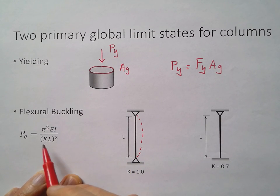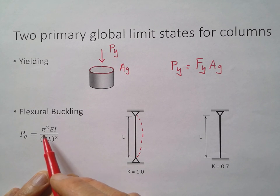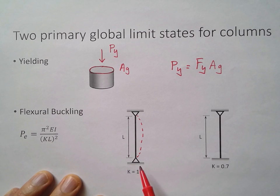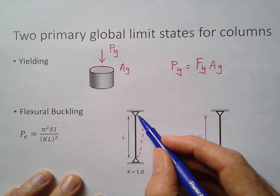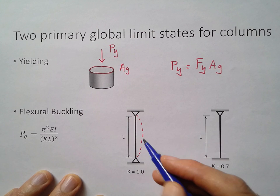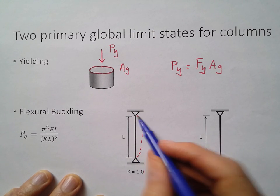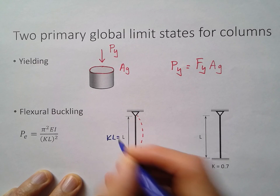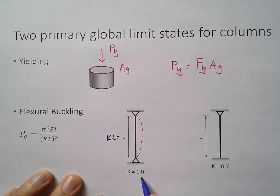With this equation, one thing I want to point out is that this K here, that's called the effective length factor, and KL is the effective length. That tells you basically how this is going to buckle based on the end conditions. For a column that's pinned top and bottom, you can see K is equal to 1.0. I like to try to visualize this in a couple of ways. You can think about KL essentially being the distance between inflection points, or another way to look at that is that KL is the distance of a half sine curve in the buckled shape. This is a half sine curve here. So KL is the entire length. K is equal to 1.0, so that makes sense.